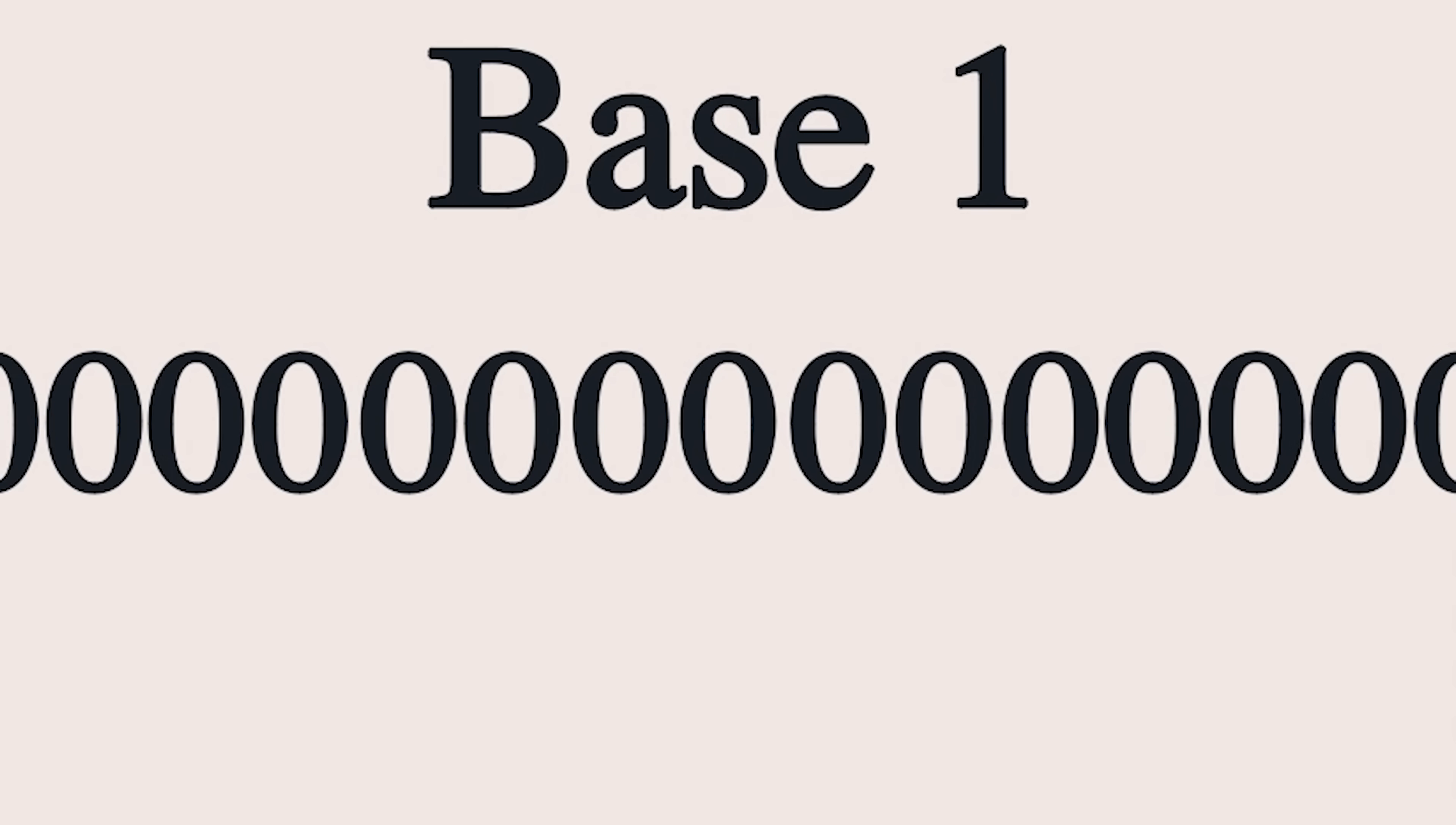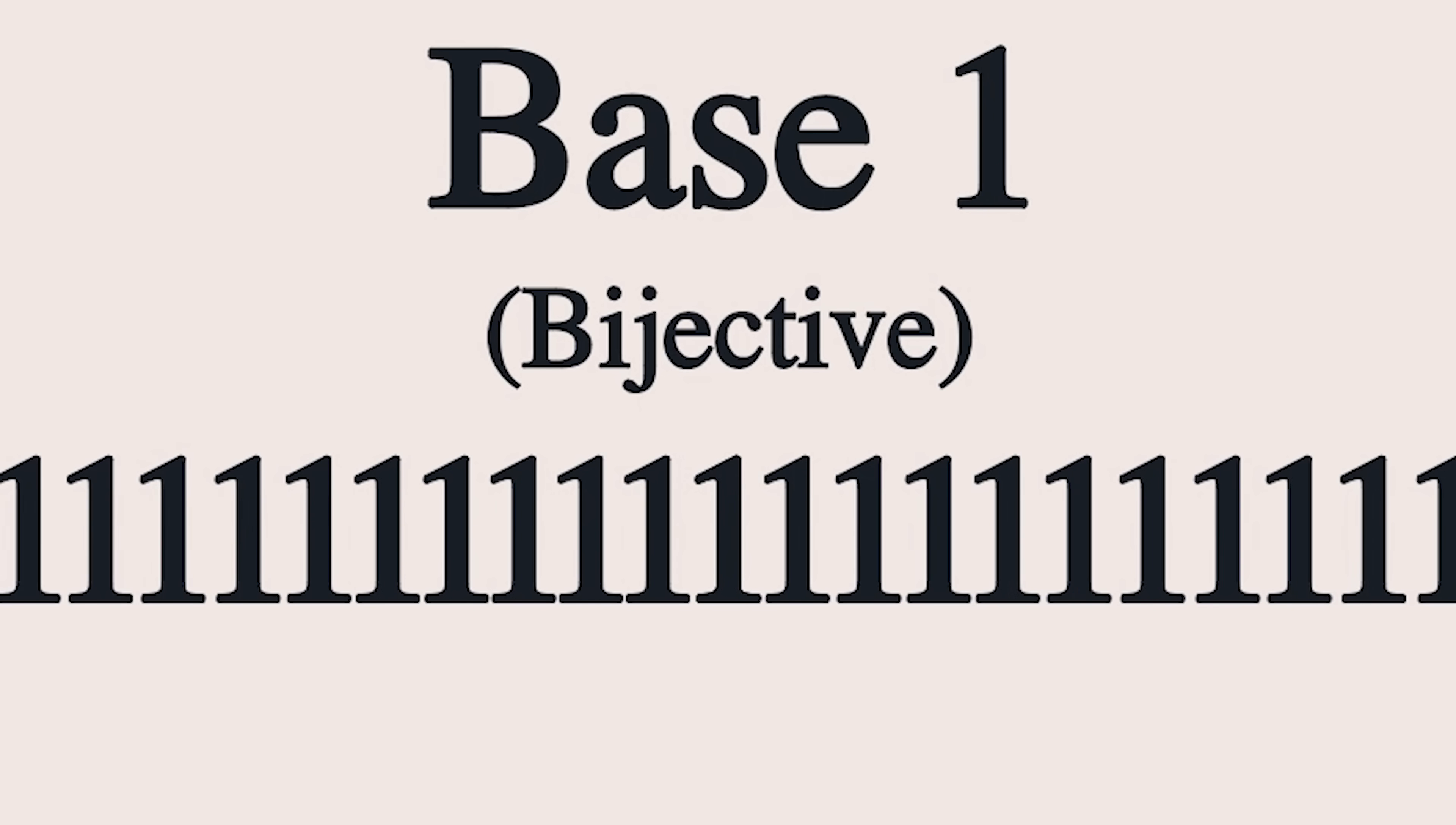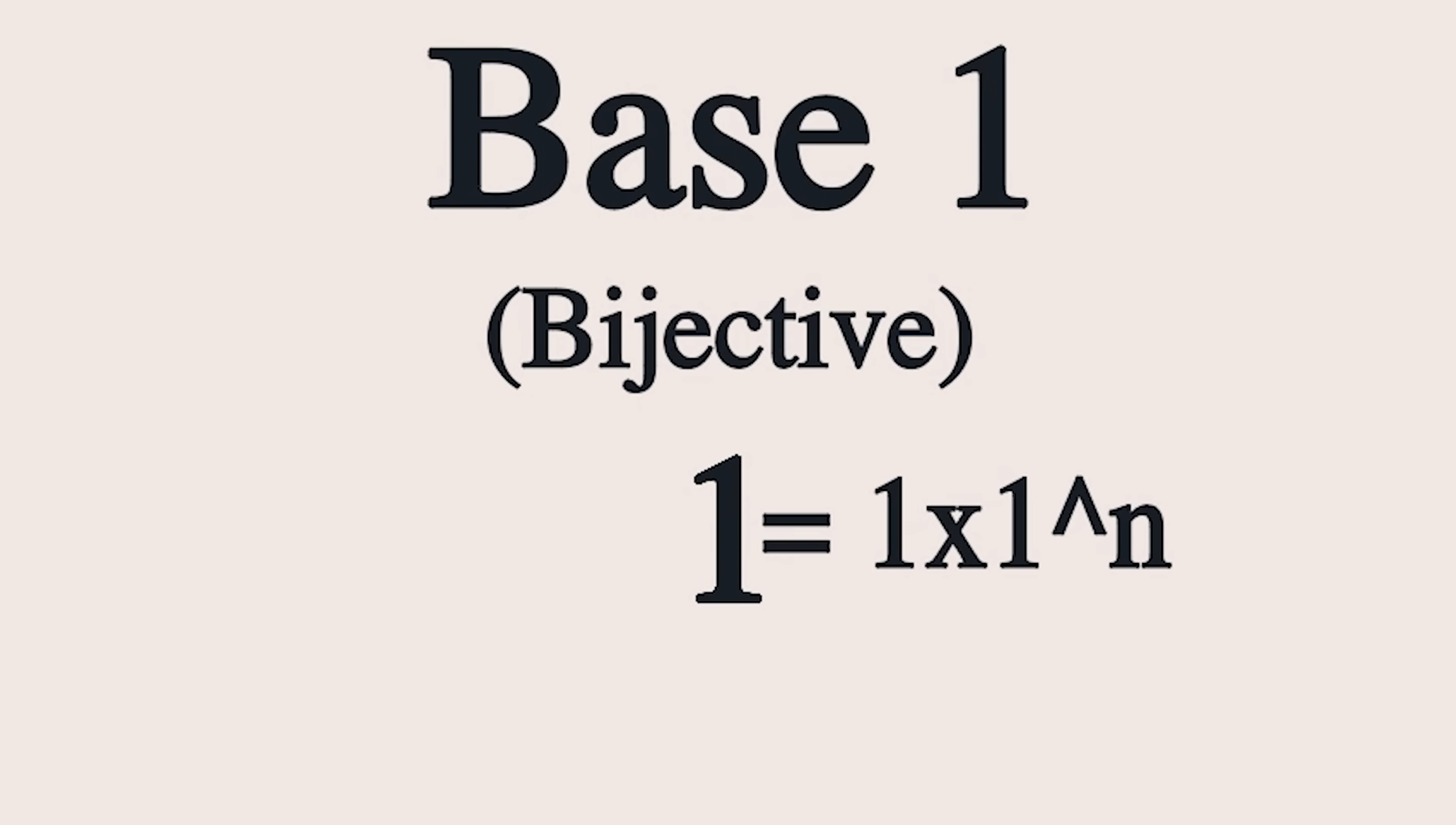What would base 1 look like? Well, the only digit that we would get would be 0, so we could only write long strings of zeros. But if we were instead to make it a bijective system, we could write strings of 1s. This way, each 1 would represent 1 to the power of something, which is always equal to 1. So congratulations, you've just invented a slightly worse version of tally marks.